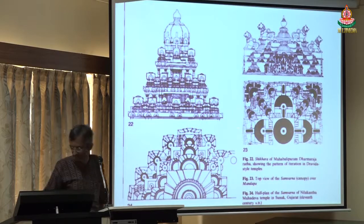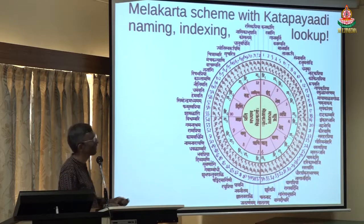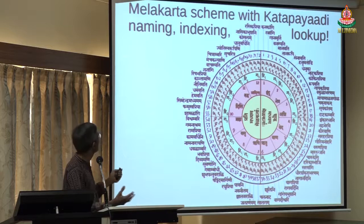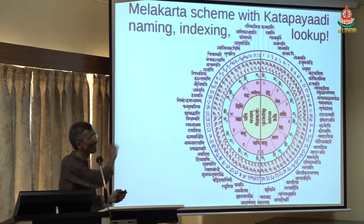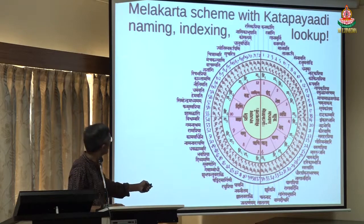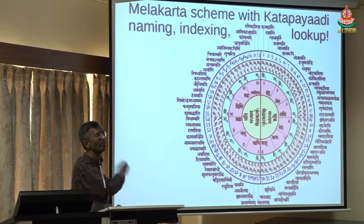This is the Raga system. You will see that all the melakarthas in Carnatic music actually have an encoding scheme called the Katapayadi scheme. This involves, in computer science terms, naming, indexing, and lookup — all these things are involved. There are 72 melakarthas, and you can see various types of swaras, various types of gamakas, etc. They are systematically looking at all the combinations.